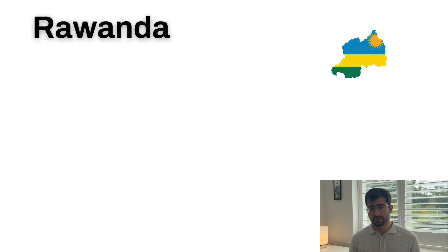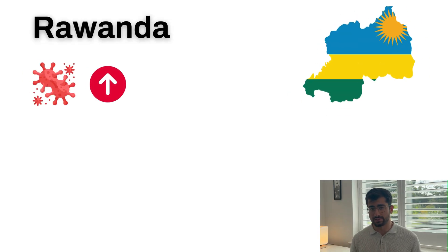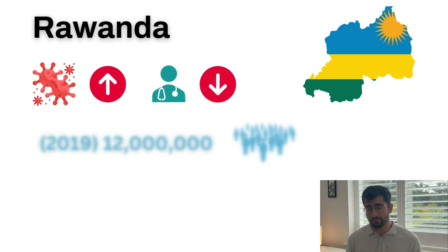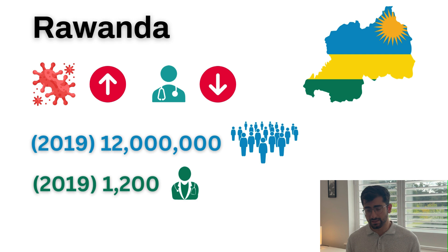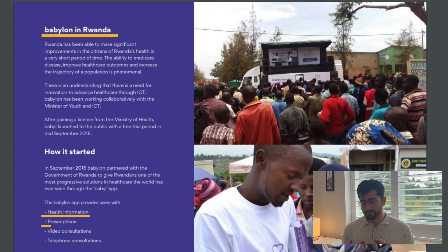Rwanda struggles with accessibility and affordability of healthcare, whilst also facing challenges of rising chronic diseases and shortages in healthcare workforce. With a population of around 12 million, it was reported in 2019 that Rwanda only has 1,200 doctors. Babylon launched an AI triage tool in call centres to enable people without expert doctor knowledge to triage patients and give them the correct care. The system collects information on patient symptoms and recommends a particular triage path, saving time for doctors, reducing cost, and improving overall efficiency.